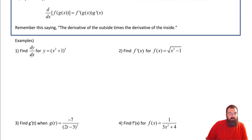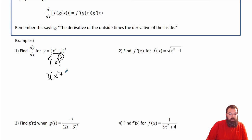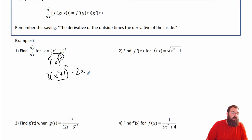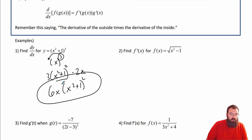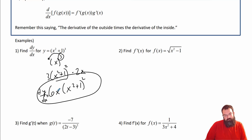Let's find the derivative of y with respect to x for this function. So I want to do the outside first — the derivative of the outside. This really acts as like x to the third power. So I bring that 3 down, keep the inside the same which is x squared plus 1, raise this to the power of 2. Now I have to multiply it by the inside function derivative, which is 2x. So the answer is 6x times (x² + 1)², that's dy/dx.